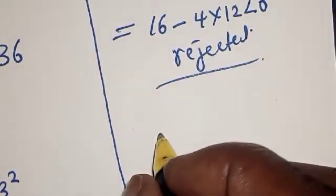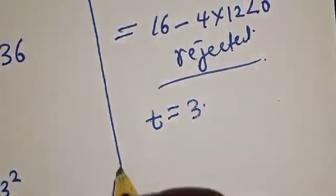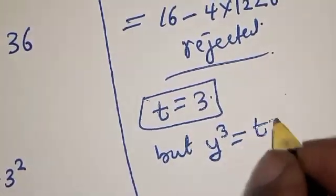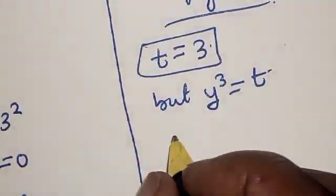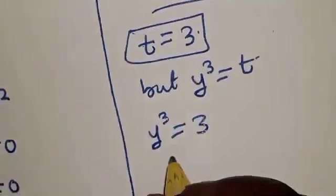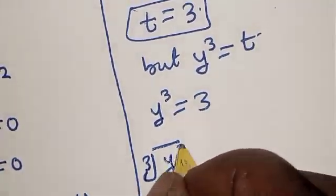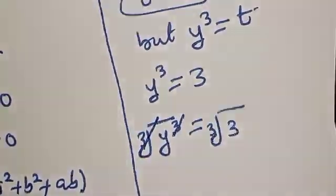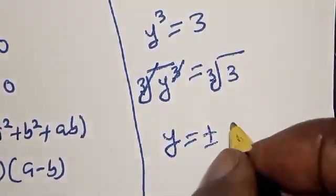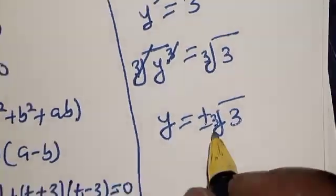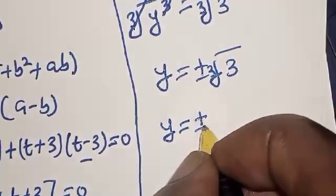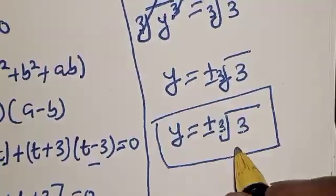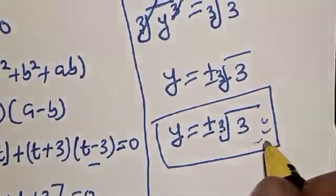Remember that y raised to power 3 is equal to t. At t equal to 3, we have y raised to power 3 is equal to 3. Taking the cube root of both sides, y is equal to plus or minus cube root of 3. So our final answer is y is equal to plus or minus cube root of 3. Before you leave, like, share, comment and subscribe. Thank you, bye.